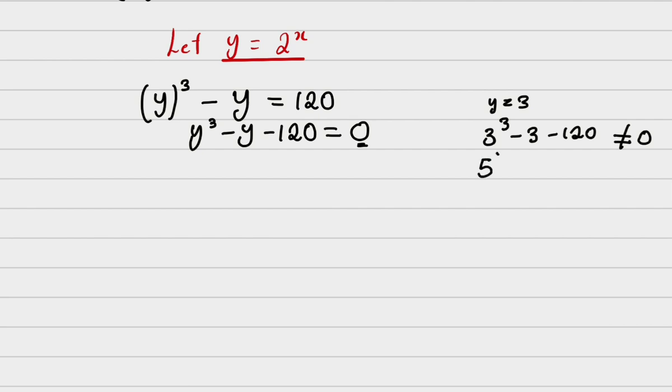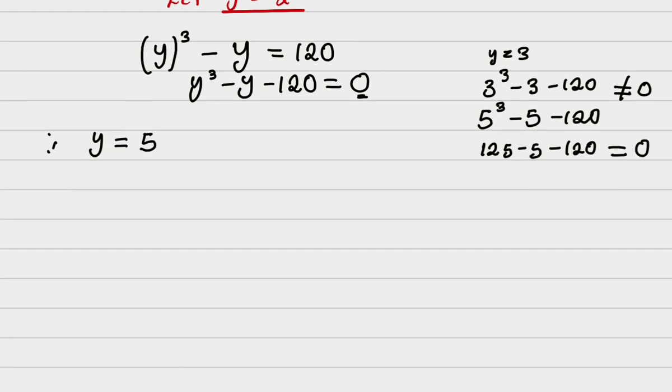So I abandon this and I will use 5 now. Let me see 5. 5 raised to the power 3 minus 5 minus 120. This is 125 minus 5 minus 120. Clearly, it will give me 0. Hence, we can say that one of the roots or one of the zeros is that y equals 5. If this is one of the zeros, it therefore means that y minus 5 equals 0 is a factor.